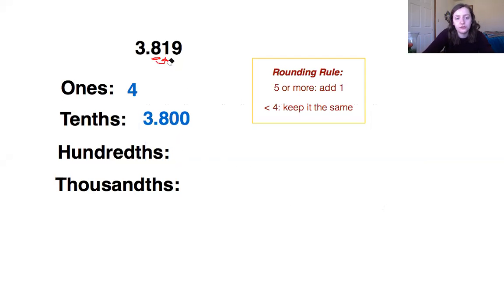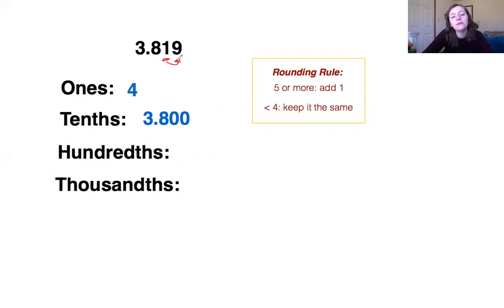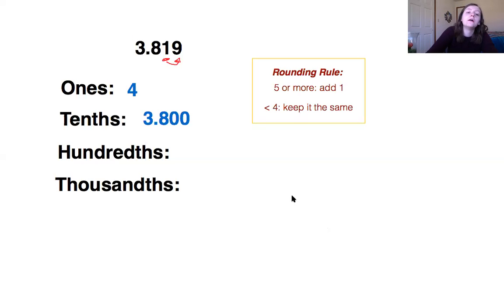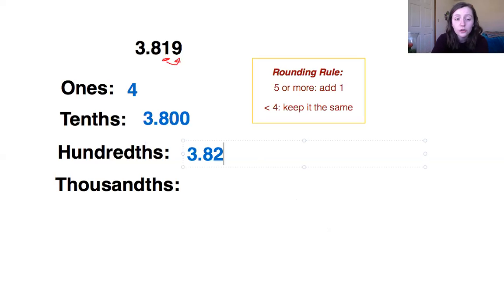Now we're going to look at the hundredths place. In the hundredths place we have our one here — that's two places to the right of the decimal. Now I'm going to ask: is the number to the right of it five or more or less than five? Is nine greater than five? If you said yes, you are correct. That means this number is closer to 3.82 than it is to 3.81. Since nine is five or more, we add one more to our one and it becomes 3.82.